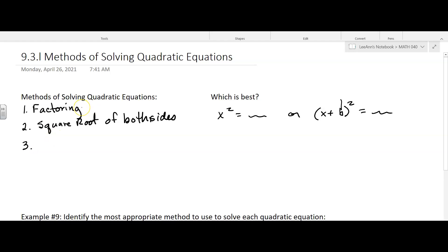When is factoring best? If it's factorable. So only if factorable. And so that's the problem is not everything is factorable. Otherwise I would just always use factoring. If we have this situation in part two where you have something x squared or a binomial squared, then I would use the square root of both sides.